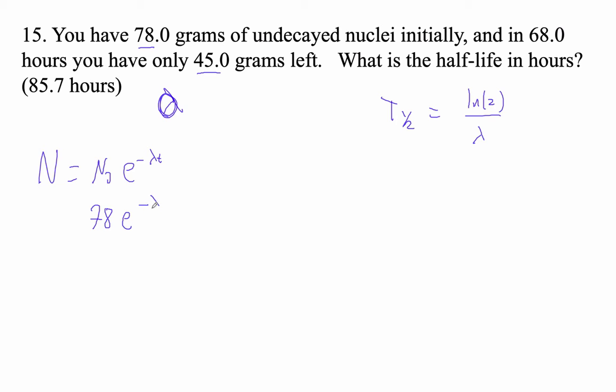E to the minus lambda times 68. Notice I'm just gonna put hours in there and that'll be fine. This decay probability will be in hours to the minus one. Let's see, we have 45 left. So at 68 hours we started out with 78 and now we got 45 left.